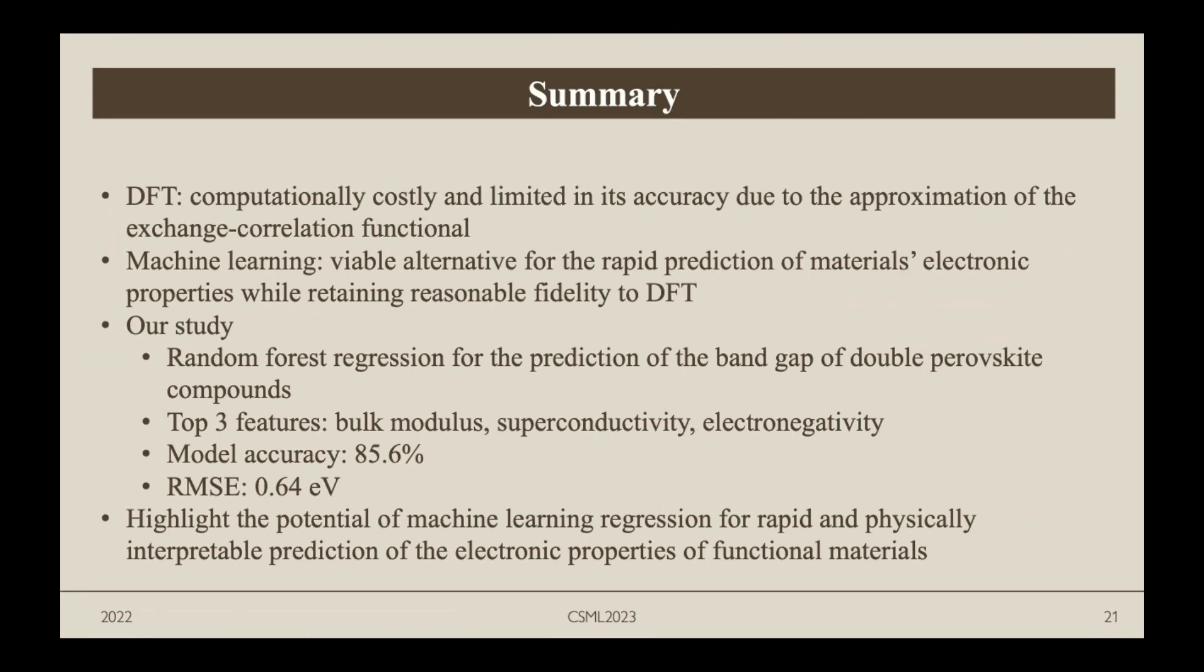In summary, DFT theory is computationally costly and limited in accuracy due to approximation of the exchange-correlation functional because it is unknown. Machine learning is a viable alternative for rapid prediction of materials' electronic properties while retaining reasonable fidelity to DFT theory. Our study uses random forest regression for prediction of band gaps of double perovskite compounds. The top three features we got were bulk modulus, superconductivity, and electronegativity. We got an accuracy of 85.6 percent and an RMSE of 0.64 eV. We highlight the potential of machine learning regression for rapid and physically interpretable prediction of electronic properties of functional materials.